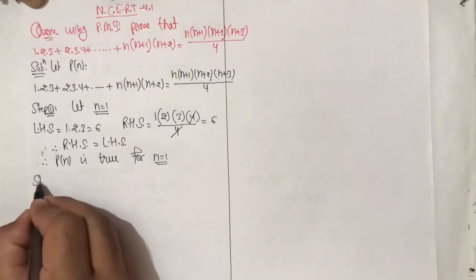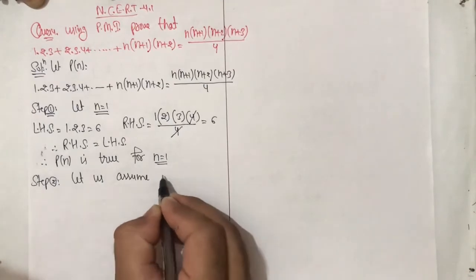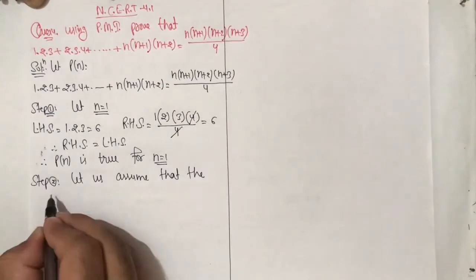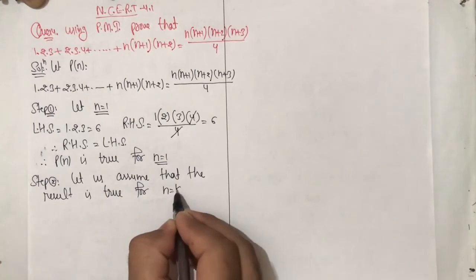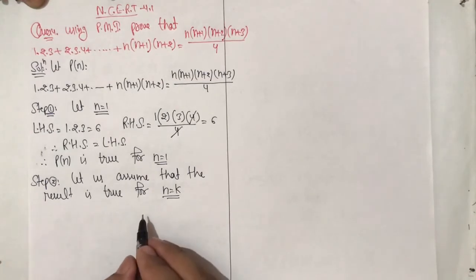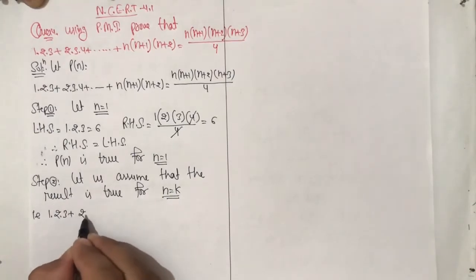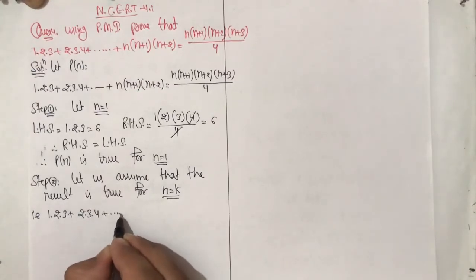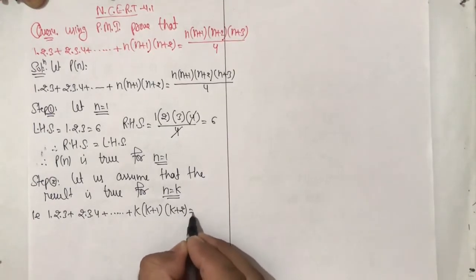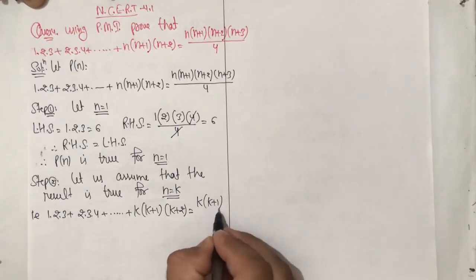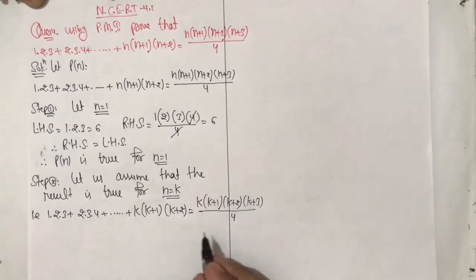Step 2: Let us assume that the result is true for n = k. हमने मान लिया कि हमारा result n = k के लिए true है। That is: 1·2·3 + 2·3·4 + ... + k(k+1)(k+2) = k(k+1)(k+2)(k+3) / 4. इसको equation (1) नाम दे दिया, इसका use करेंगे आगे।